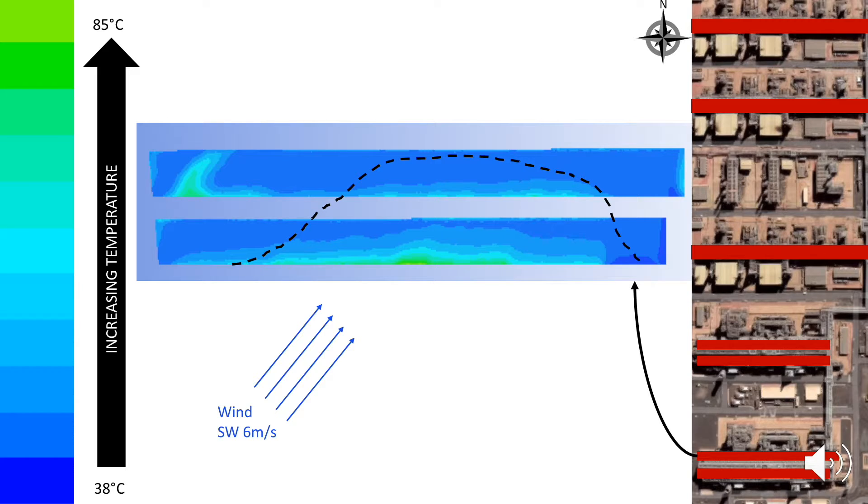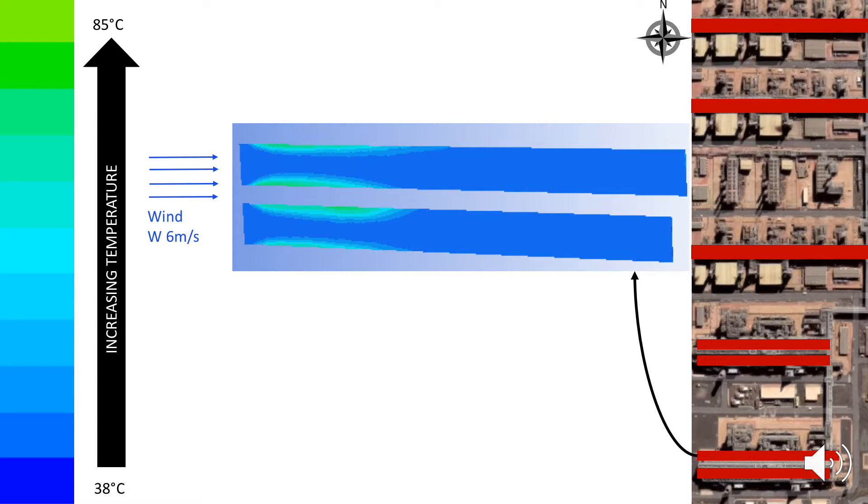This was indicated by the results. As you can see the side that faces wind direction experiences high degree of hot air recirculation. Similarly, for west wind direction, the area most affected by recirculation is the side of the train which faces the wind directly.